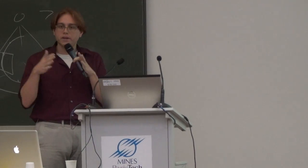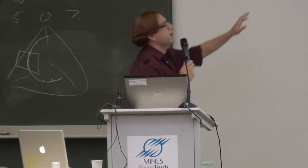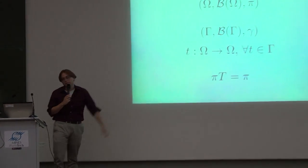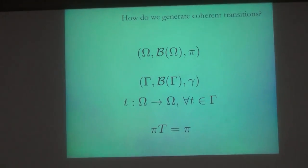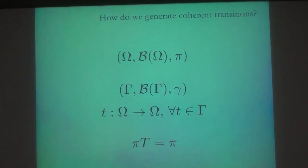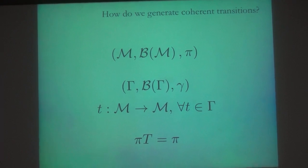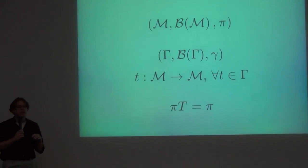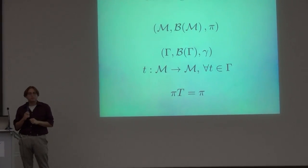Let's go back to our definition. We have our sample space and our Markov chain. Now let's imagine we have a smooth density — a nice, continuous, say infinitely differentiable density. That means we can think of our state space as a manifold. And now our problem is trying to find coherent mappings of a manifold into itself.